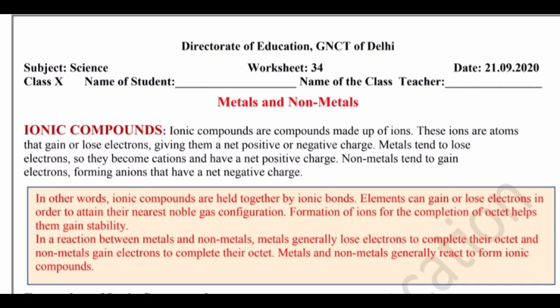Metals and non-metals generally react to form ionic compounds. Any metal or non-metal mein jab bhi reaction hogi to woh ionic compound hi banaenge. Jo atoms hain woh electrons dete hain taaki woh stable ho sakein, aur kuch non-metals ke jo atoms hain woh electrons lete hain taaki woh stable ho sakein aur octet bana lein. Octet ka matlab hai jo outermost cell hai atom ka, usme 2 ya 8 hone chahiye stability ke liye. Agar kam hai to atom unstable rahega — gain karna aur lose karna sirf isi par depend karta hai.